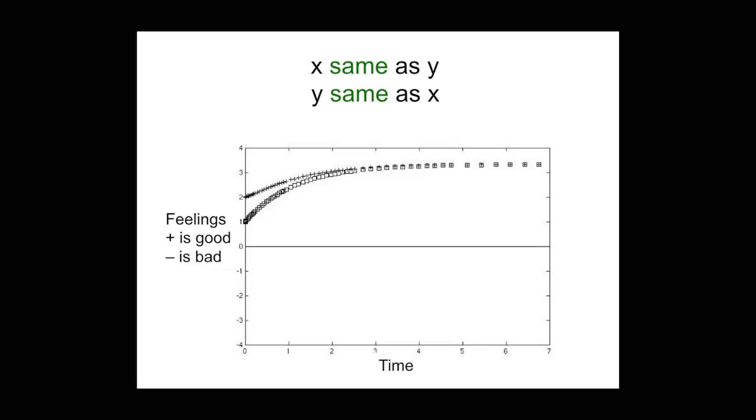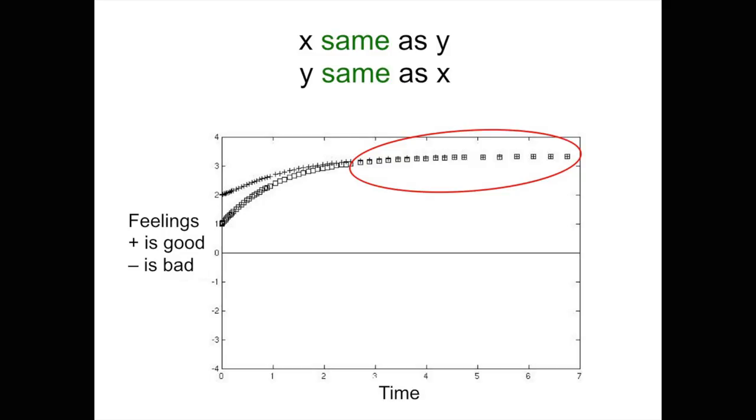So what we do is put these equations into a computer from these very simple assumptions, shown on a graph where the vertical axis is the emotional state of each person — up is happy and down is unhappy — and we compute on the horizontal axis what happens in time. In this case, both of them wind up being happy, which seems reasonable.